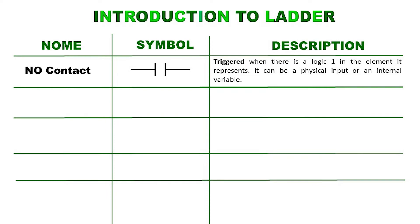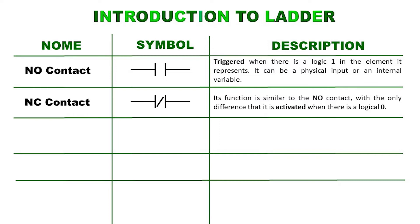Normally open contact: it is activated when there is a logical one in the element it represents. It can be a physical input or an internal variable. Normally closed contact: its function is similar to the normally open contact, with the only difference that it is activated when there is a logical zero in the element it represents.